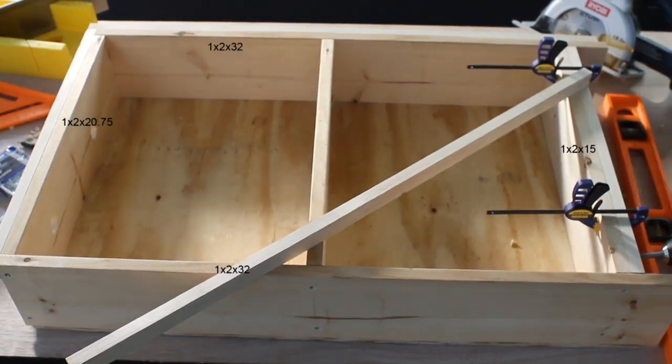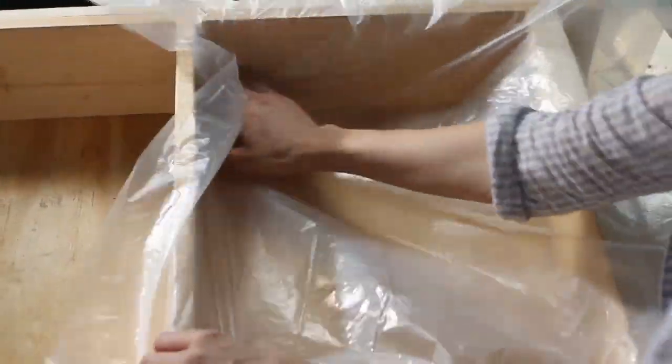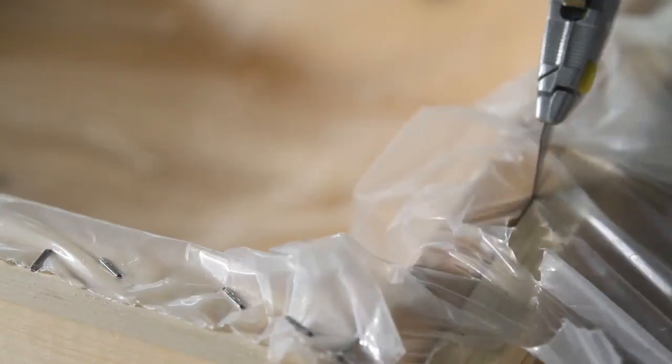Now we're ready to line the bed with plastic sheeting. Do this to prevent wood rot and warping. Line each compartment separately and leave enough slack for the soil. Staple the plastic in place and cut away the excess.